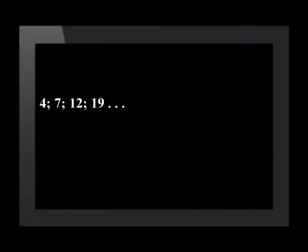Usually quadratic sequences are not that easy. Let's do a more complicated one together. Look at the pattern 4, 7, 12, 19. It's not easy to say what the general term is by just looking at the numbers. Term 2 minus term 1 is 3, and term 3 minus term 2 is 5. So it is not a linear number pattern. Could it be quadratic? A quadratic sequence is a sequence of numbers in which the second difference between each consecutive term is constant.